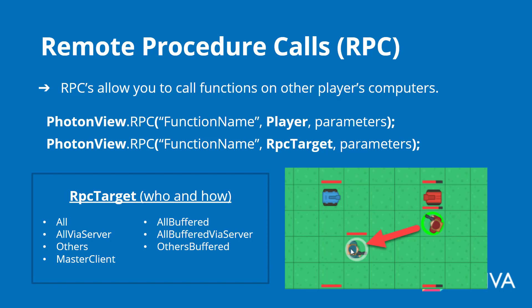There are two different ways to do an RPC. The first is you go PhotonView dot RPC, and then in brackets you have the name of the function as a string, then a comma, and then you enter in the player you want to send it to — the PhotonPlayer. That is the person we want to send this to, and then you can include some parameters if you have any.